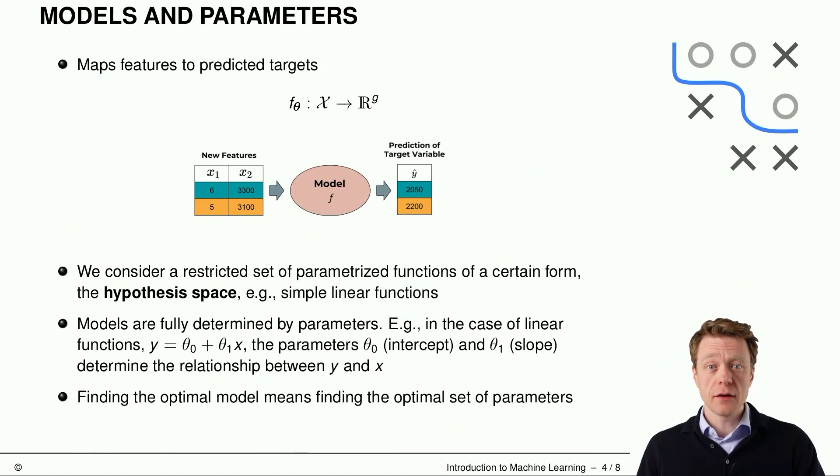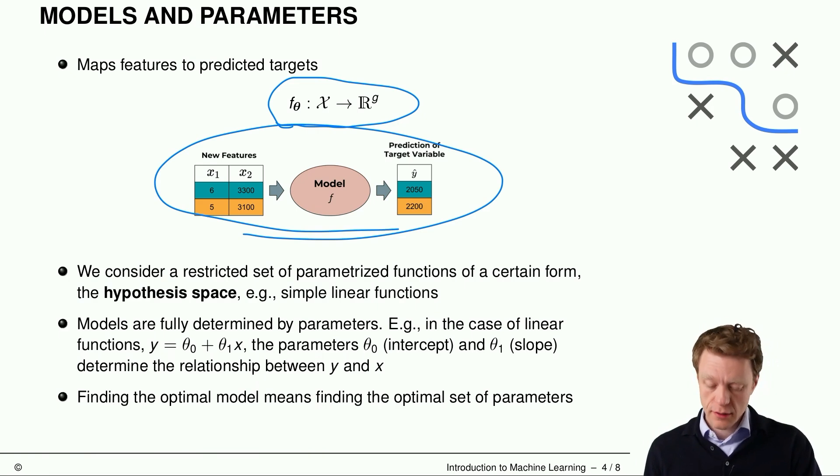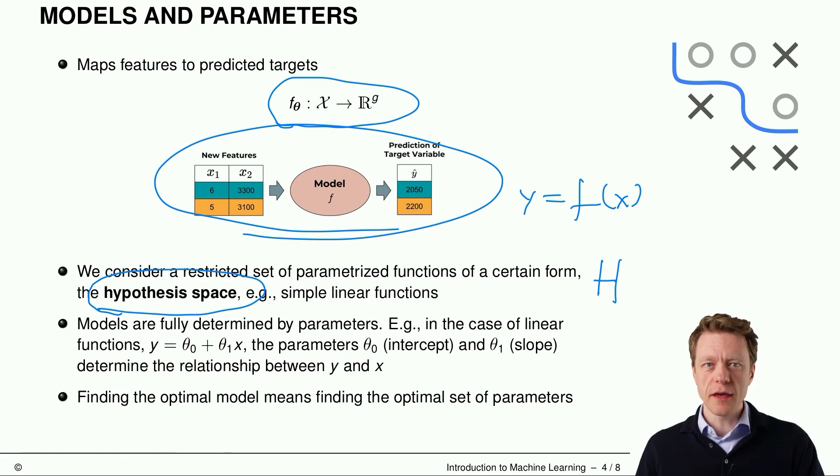Next concept is that of a model. Model F maps from feature space to R to the power of g. In usual regression, g will just be 1. And in multi-class classification, g is the number of classes. Model F is exactly the connection between features and target. So we will predict y as f of x. We consider only a restricted set of these functions and gather all these functions in a thing called hypothesis space, h. And this hypothesis space is a set of all functions that we allow to be there.